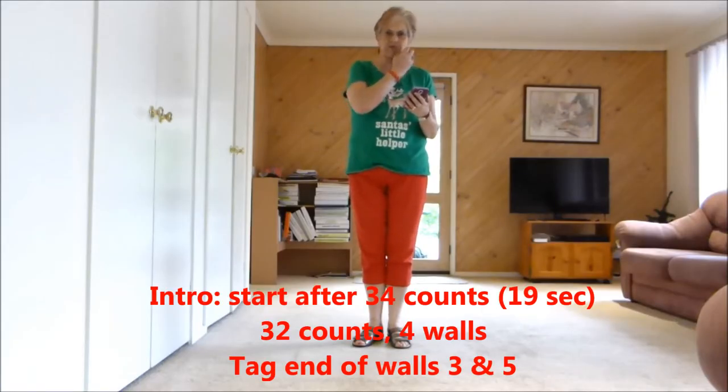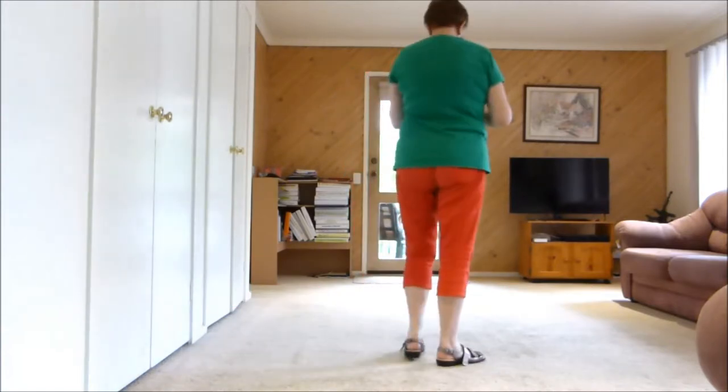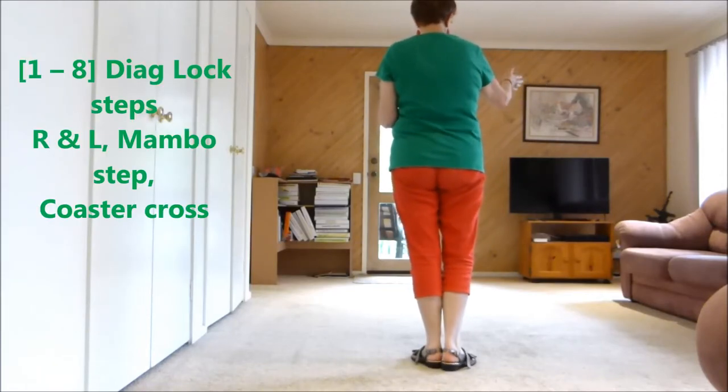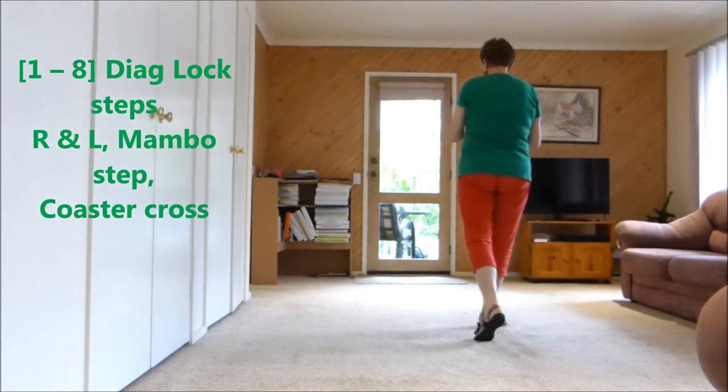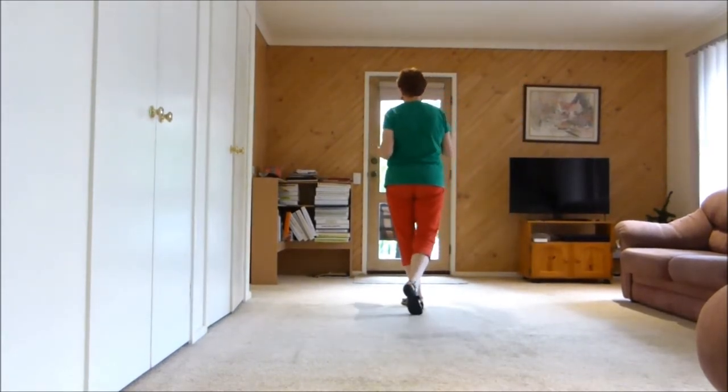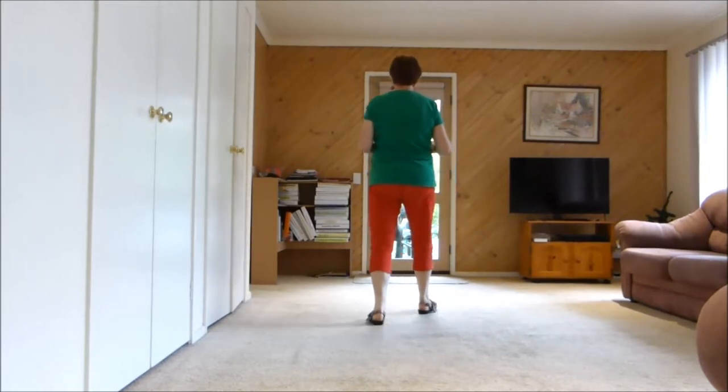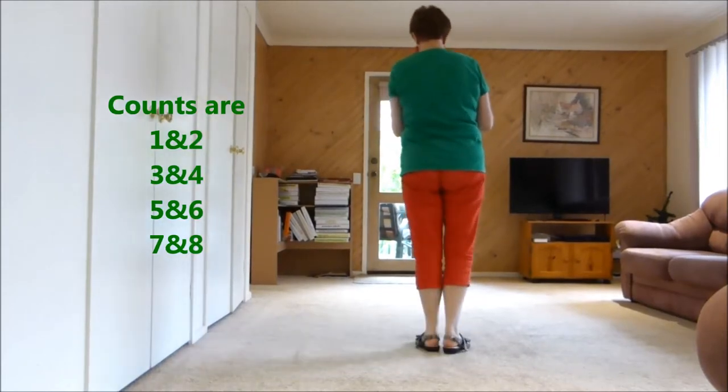This dance is by Francine Citrop, 32 counts, four walls, and it has a tag done twice. It starts off like this: on the right angle on a one o'clock wall, right lock right. On the 11 o'clock wall, left lock left. Now we straighten up: forward lock back, back together cross. So those are the first eight counts.